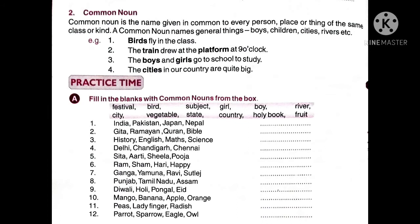Like this you have to do the practice exercise. India, Pakistan, Japan, Nepal — yeh sab kya hai? These are names of countries, so we write country. Gita, Ramayan, Quran, Bible — yeh kya hai? Holy books — toh hum yehaan likhenge holy book. History, English, Math, Science — yeh saree kya hai? Subjects — so we write subject. Delhi, Chandigarh, Chennai — these are metropolitan cities, so we write city. Sita, Arthi, Sheila, Pooja — yeh sab girls hai, so we write girl. Ram, Sham, Harry, Happy — yeh boy ke names hai, so we write boy. Like this common noun practice you can do.